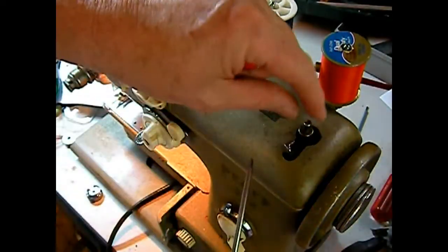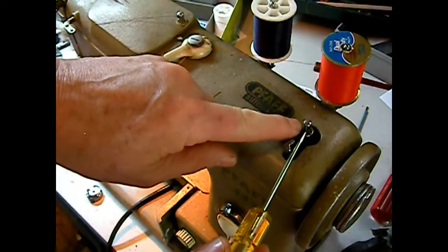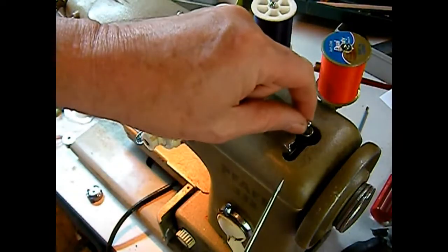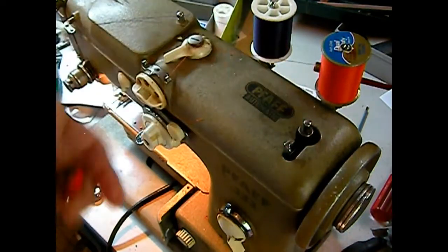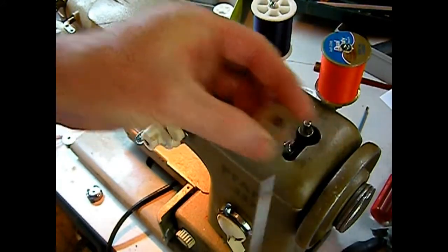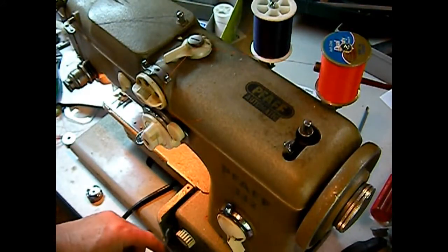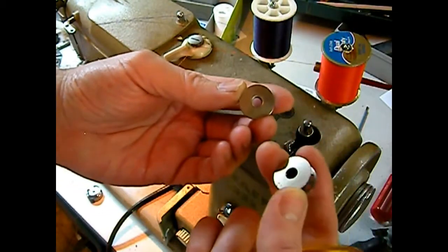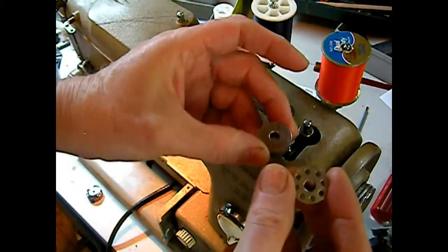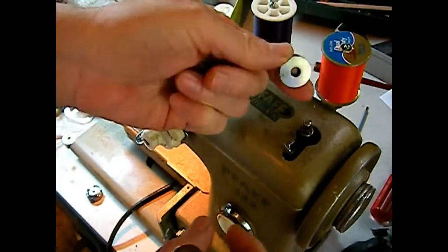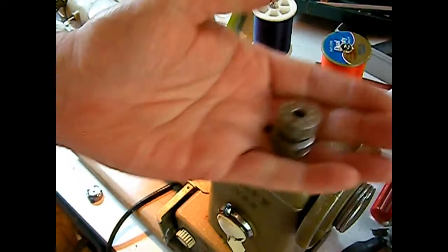One thing I want to point out - see that little notch? You got to have a bobbin with a notch in it. Here's some bobbins off another machine. They don't have a notch in it. Even though they fit on there, they won't lock onto the shaft, so you can't wind the bobbin with them.